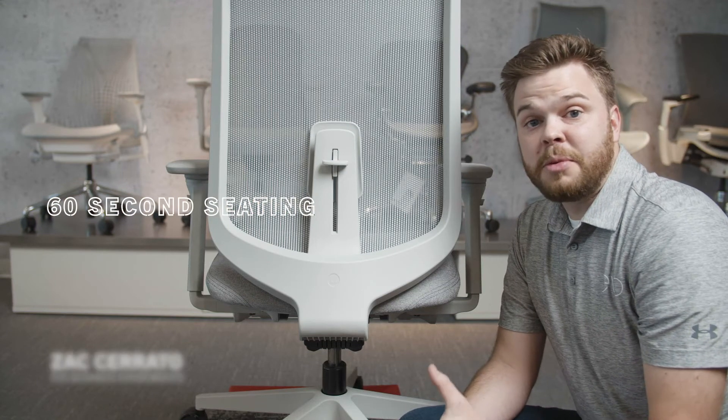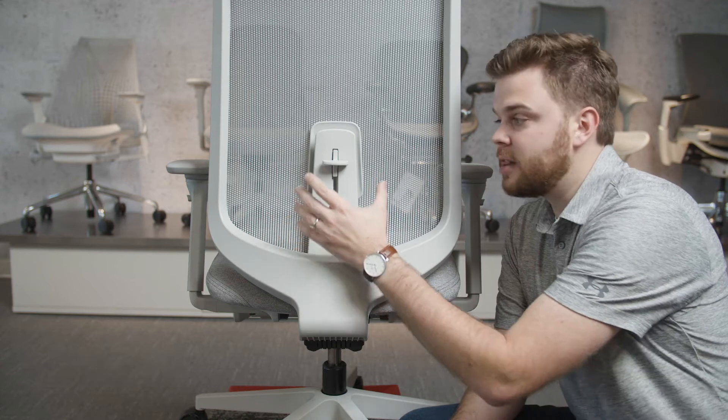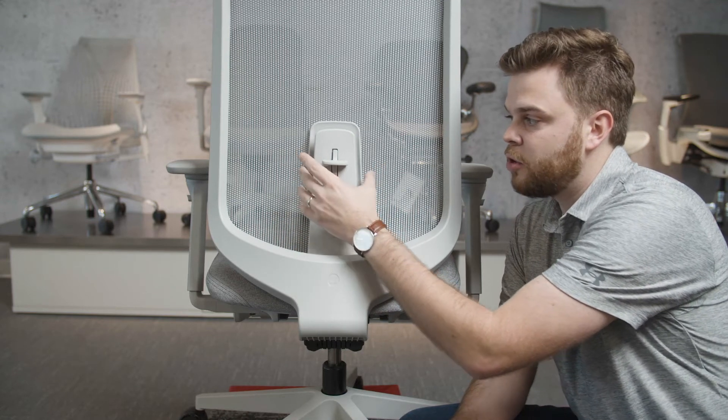So when we talk about ergonomics, a lot of people want to talk about lumbar support. Now all the Herman Miller seating has got lumbar support. This is a Varus chair and this is its lumbar support right here.